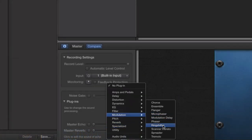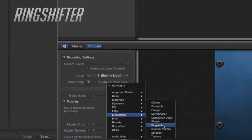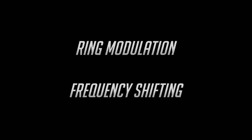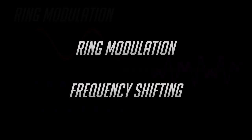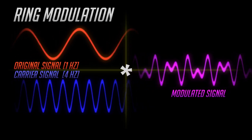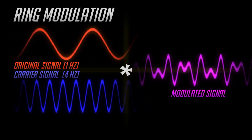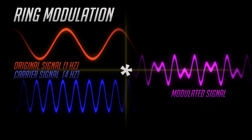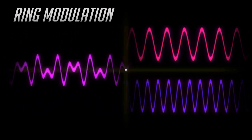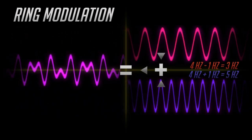The second effect is called Ring Shifter. This effect combines two well-known effects: ring modulation and frequency shifting. The reason they're combined is because they're mathematically similar. Ring modulation takes a signal and multiplies it by a carrier signal, which effectively splits the signal into two copies — one shifted up in frequency and the other shifted down in frequency.